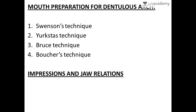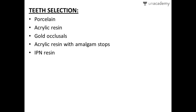Impressions and jaw relations: impressions of the edentulous arch are taken considering the state of that arch, while impressions of the dentulous arch are made with irreversible hydrocolloid (alginate), and then casts are poured. For teeth selection, available materials include: number one, porcelain; number two, acrylic resin; number three, gold occlusals; number four, acrylic resin with amalgam stops; and number five, IPN resin.